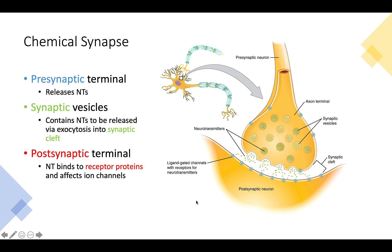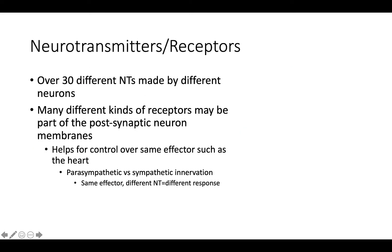There are over 30 different types of neurotransmitters made by various neurons, and many different kinds of receptors can be part of the postsynaptic neuron membrane. This allows for fine control over the same effectors, such as the heart. We see this in parasympathetic and sympathetic innervation of smooth muscles, cardiac muscle, or glands — the same effector organ receives different neurotransmitters from each system, eliciting different responses.